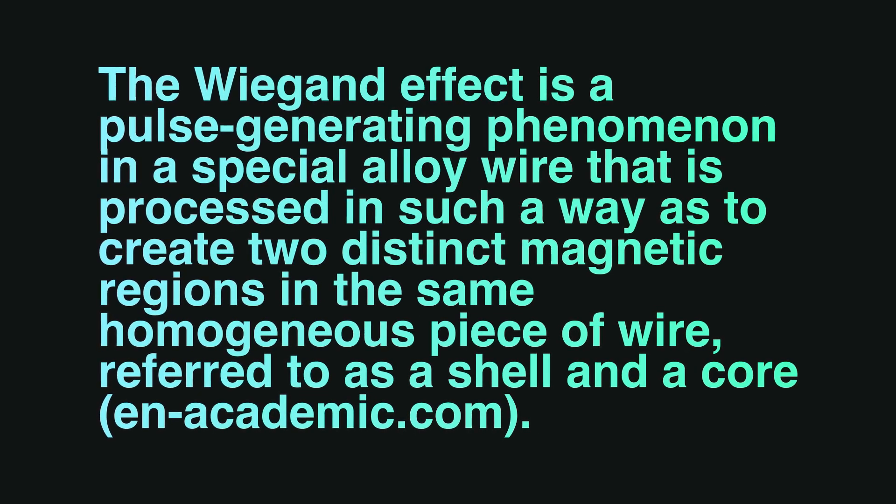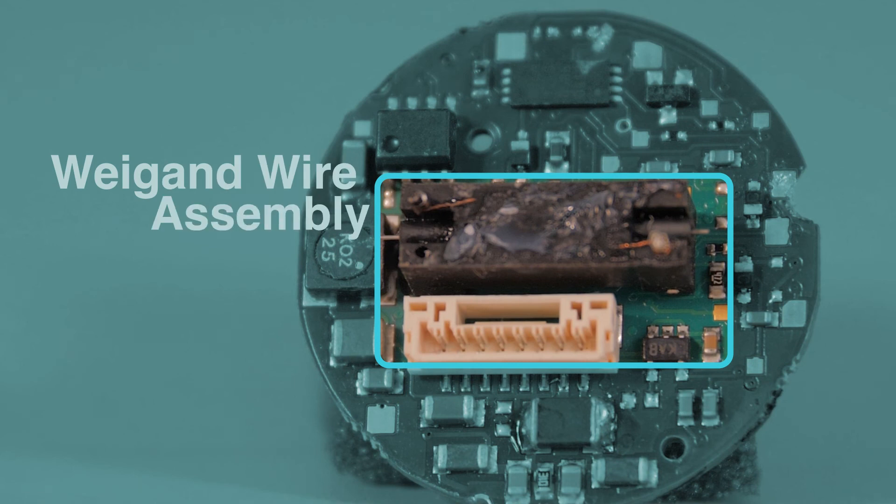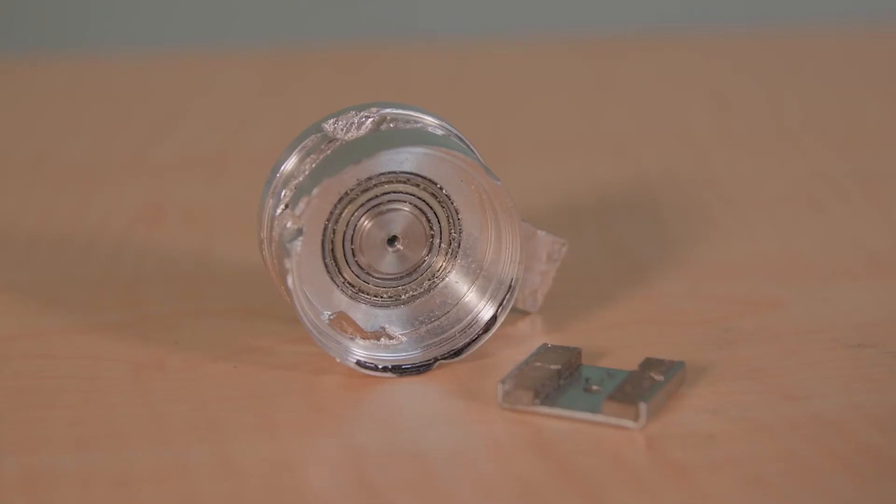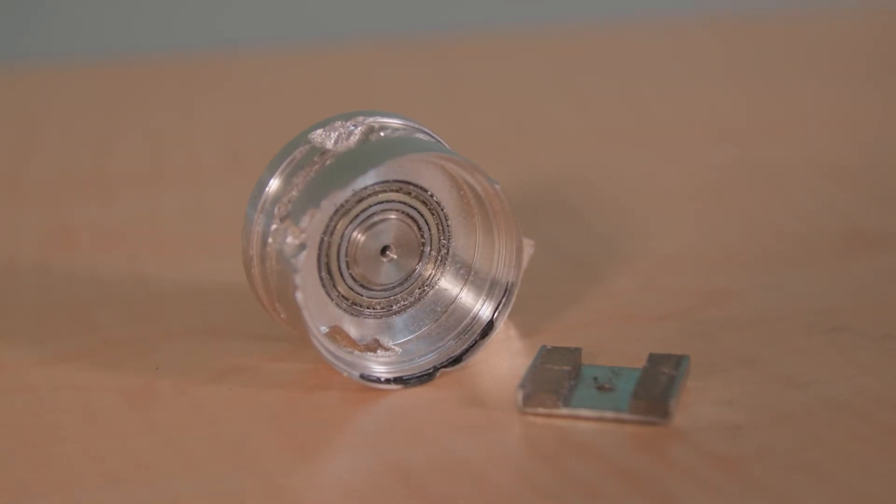The typical way of taking advantage of the Wiegand effect is to put the Wiegand wire in the middle of a coil, which is what you'll find on the PCB inside the Avtron absolute encoder. You find two magnets attached to the spinning shaft to generate the pulses.